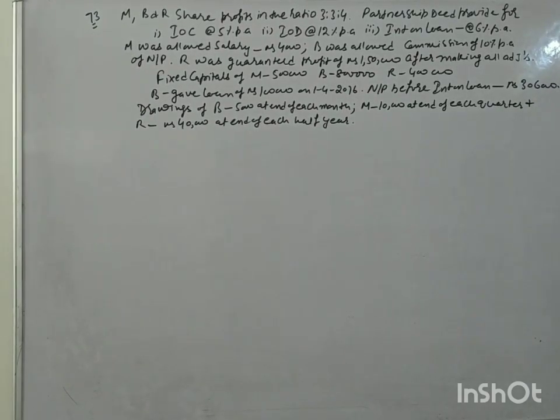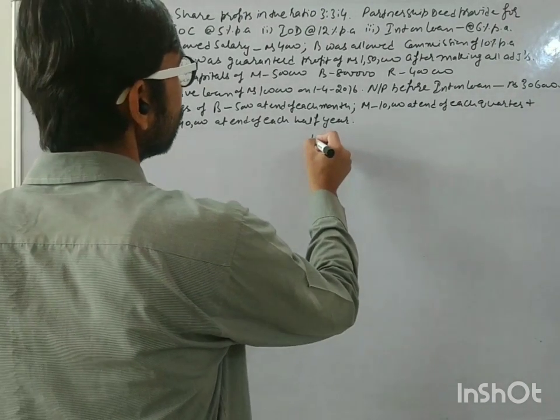Illustration 73 shows M, B, and R share profit in the ratio 3:3:4. Partnership deed provided for interest on capital at the rate of 5% per annum, IOD at the rate of 12% per annum, interest on loan at the rate of 6% per annum. M was allowed a salary of rupees 4,000, B was allowed a commission of 10% per annum of net profit, and R was guaranteed a profit of 150,000 after making all adjustments. Fixed capitals of M, B, and R are 5 lakh, 8 lakh, and 4 lakh rupees. B gave a loan of rupees 1 lakh on 1st October 2016. Net profit before interest on loan is 3 lakh 6,000. Drawings of B is rupees 5,000 at the end of each month, drawings of M is 10,000 at the end of each quarter, and R is rupees 40,000 at the end of each half year.